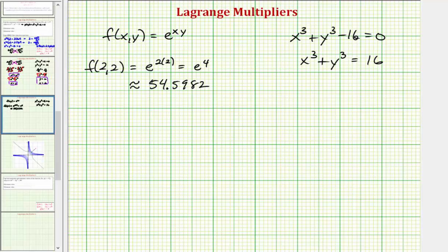To determine whether this is a max or min, let's select another point satisfying the constraint and compare its value to 54.5982. If we let x equal 0, then y would equal the cube root of 16. Evaluating f(0, cube root of 16) gives e raised to the power of 0 times the cube root of 16, which is e to the zero, which equals 1. Because this function value is less than e to the fourth, e to the fourth is the maximum of f under the constraint, and therefore the minimum does not exist under the given constraint.